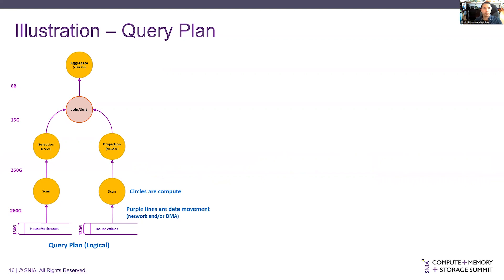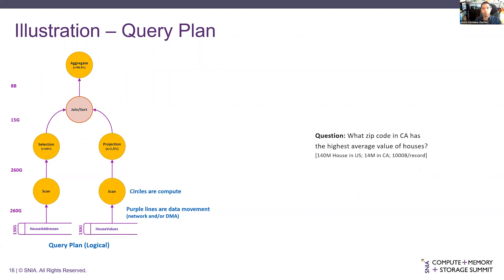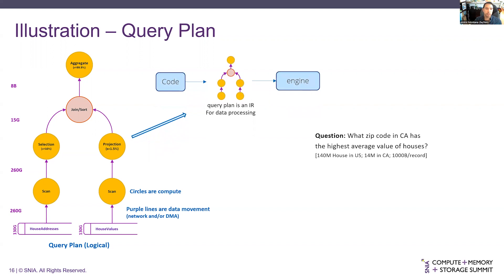At the bottom are some datasets for an illustrative example. Data might go through a scan or read, be projected to just a few columns of the table, then there's a join and sort where we might be integrating with another dataset, and then an aggregate function at the top getting an average. This query plan represents the simplified question: what zip code in California has the highest average value of houses? This query plan is really an IR or intermediate representation for data processing — you have code or SQL queries that get mapped to a query plan, which can then be passed to engines for actual execution.